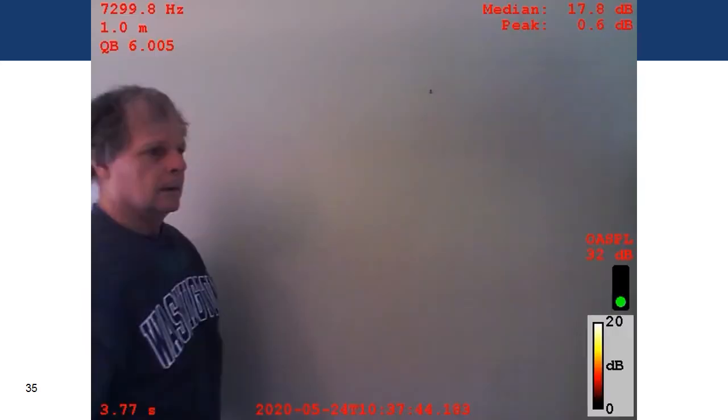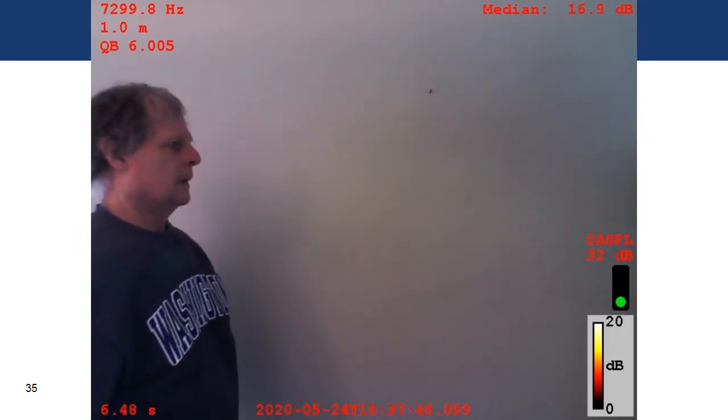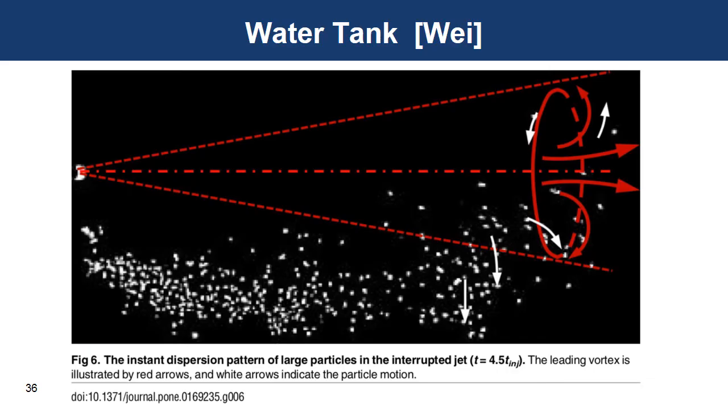So back to beamforming, here's an example of two coughs. So I'm going to beamform the sound made by the jet and show its transient nature. Here's another picture of a puff. This is in a water tank. So the circle on the right shows the leading vortex of the puff, and the spots are large particles that have settled out of the jet. The smaller ones would have been carried along with it more.